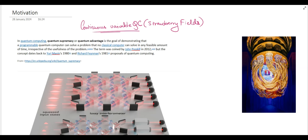In quantum computing, quantum supremacy is the demonstration that some quantum computer was able to solve some problem — let's say a database searching problem — faster than a classical computer in a feasible amount of time. It is not necessary that the problem solved should be a useful problem with some commercial application; it should just be a demonstration that this quantum computer is able to solve some puzzle faster in a feasible amount of time.